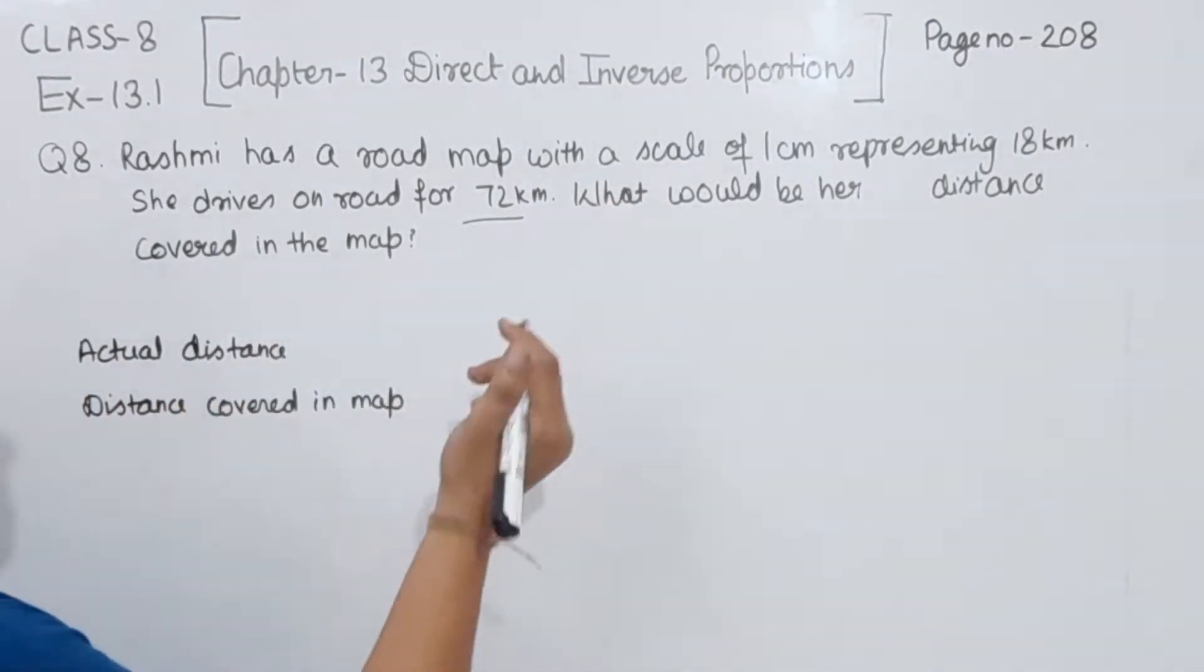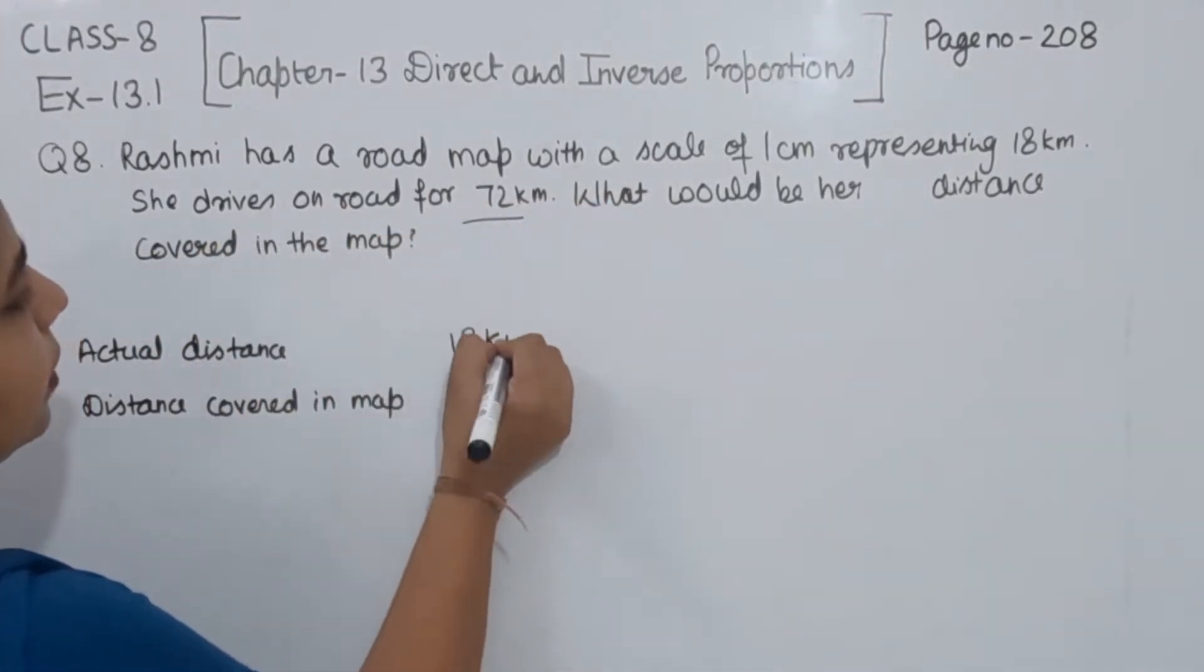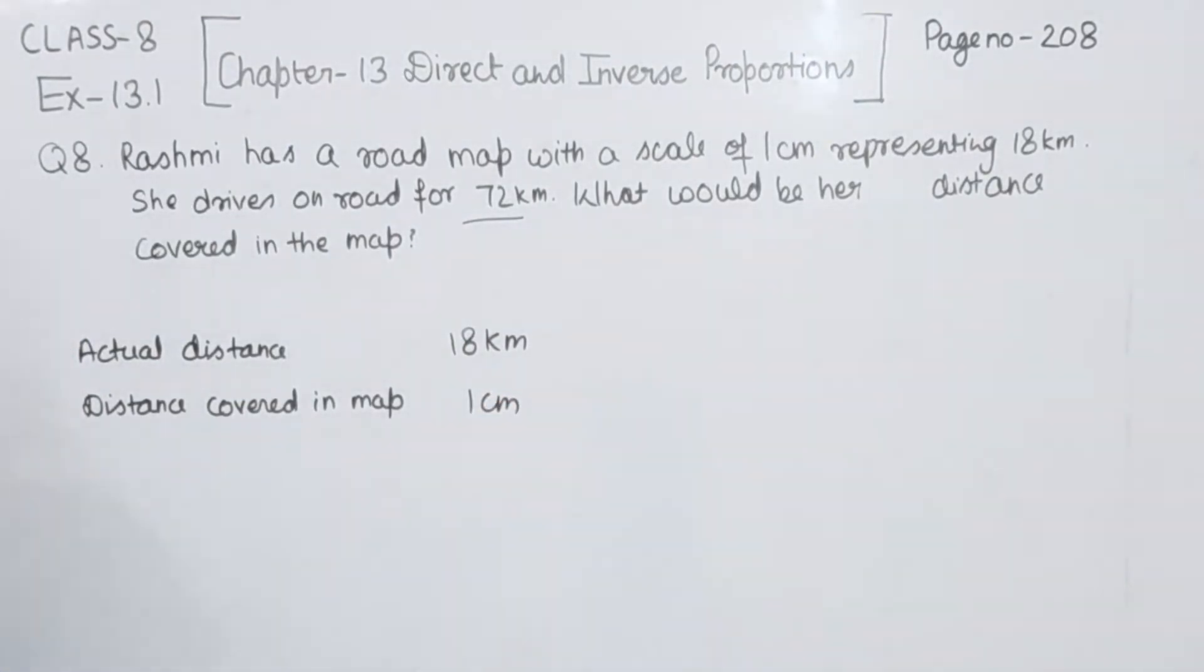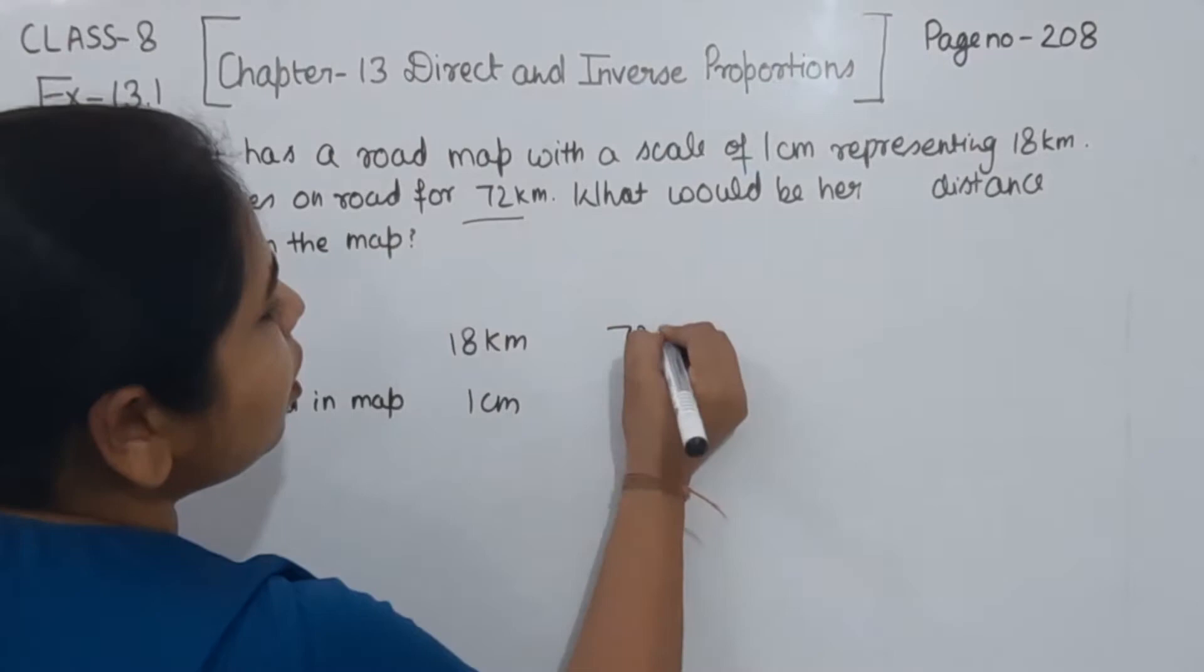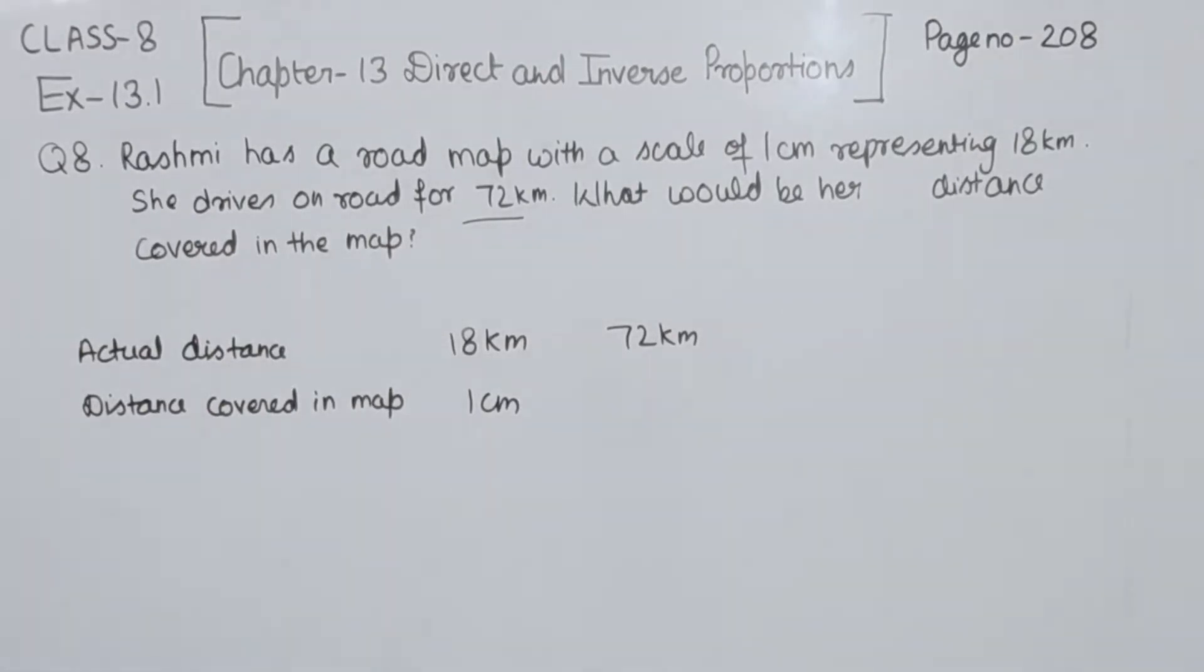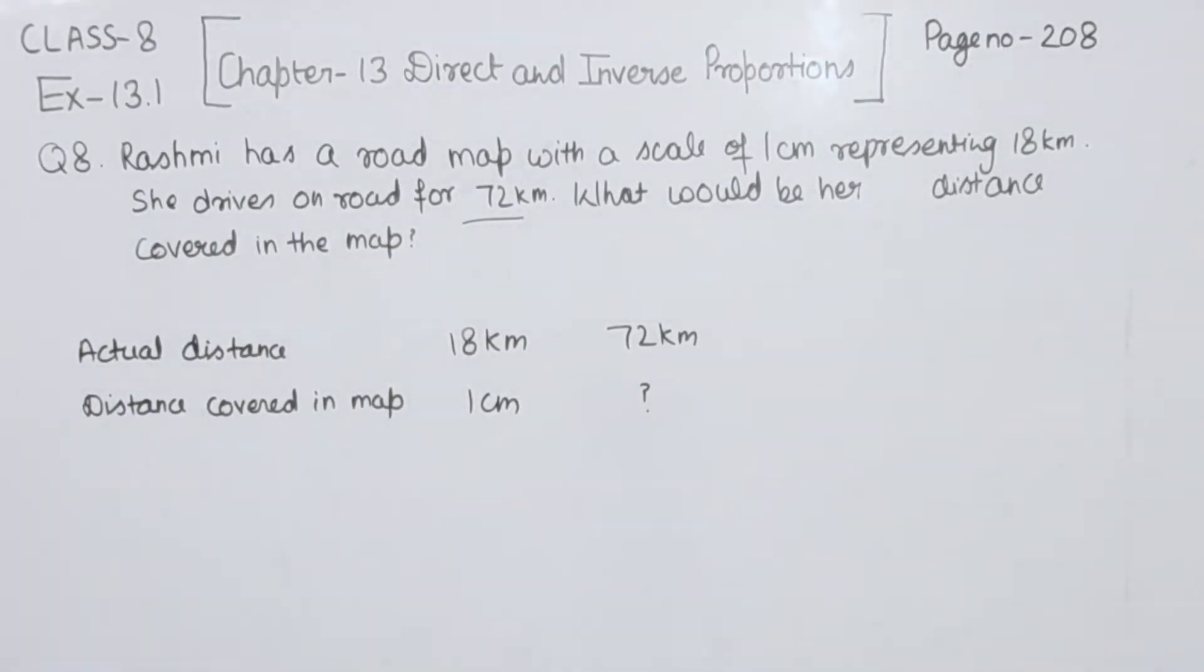Now the actual distance we are having is 18 km, then the scale in the map we are having is equal to 1 cm. Now she drives 72 km. So she has to mark the distance on the map, how much km she traveled. So we are not having the distance covered on the map. So we have to find this one.